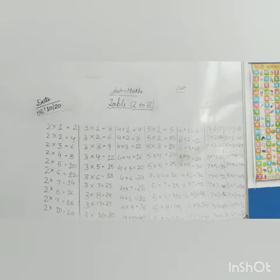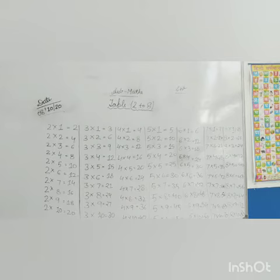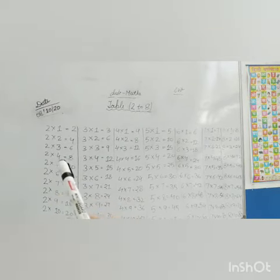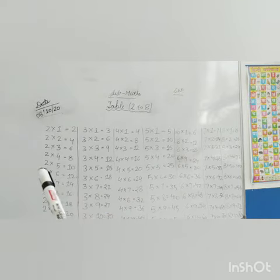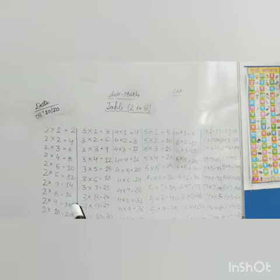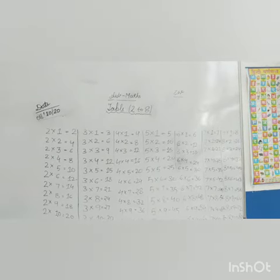you are writing you have to speak them aloud so that you can learn it. Like this: 2 ones are 2, 2 twos are 4, 2 threes are 6, 2 fours are 8, 2 fives are 10, 2 sixes are 12, 2 sevens are 14, 2 eights are 16, 2 nines are 18, 2 tens are 20. 3 ones are 3,